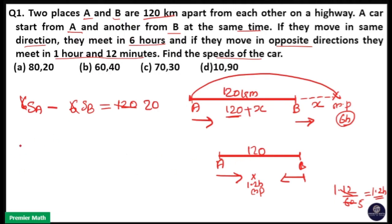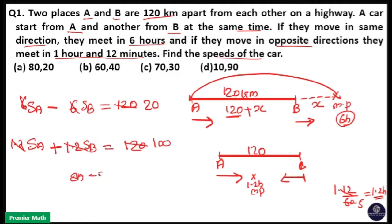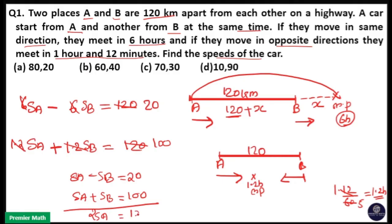They both cover 120 km combined. So: SA into 1.2 hours plus SB into 1.2 hours equals 120 km. They travel the same time with different speeds. Cancelling 1.2 gives SA plus SB equals 100. Now, SA minus SB equals 20 and SA plus SB equals 100. Adding: 2·SA equals 120, so SA equals 60 km/h, and SB equals 60 minus 20, that is 40 km/h. So option B is the answer.